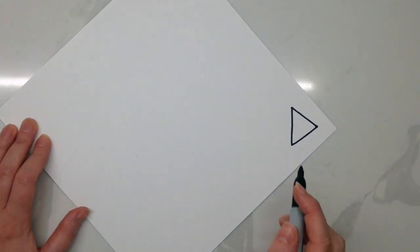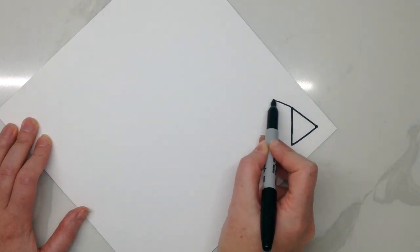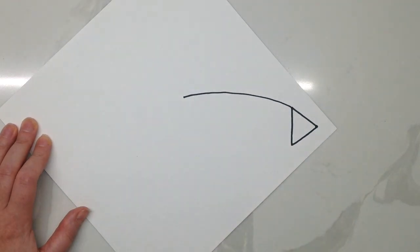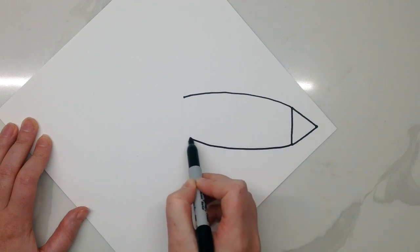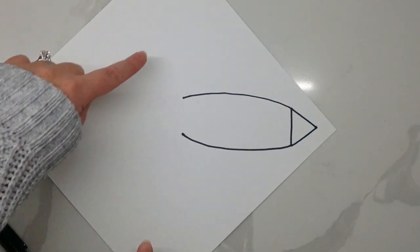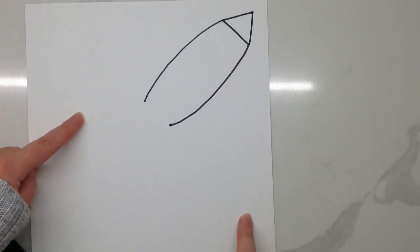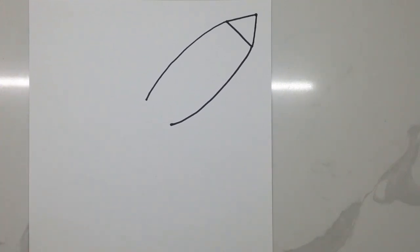Now we have to turn our paper so that it looks like a diamond. This is going to help make it easier to draw the body of our rocket. Now that our paper is twisted, we can use a frown line on top of the triangle and then a smile line on the bottom corner of our triangle to create the body of our rocket ship. Great job! Now we can turn our paper back to square.